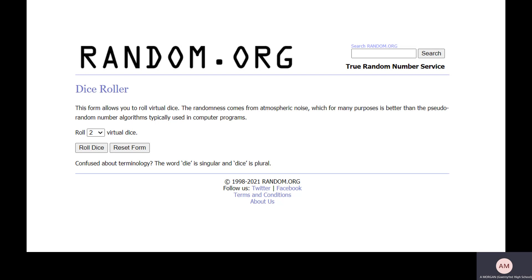But in practice, let's have a look and see what happens. So I've got random.org, which is a website that does a lot of different random things. It could be random number generators, random ordering of things, but it also rolls dice.